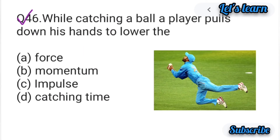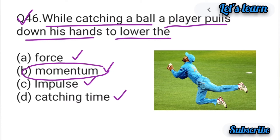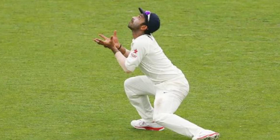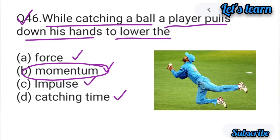Question number 46: While catching a ball, a cricket player pulls his hands down to lower the — जब कोई cricket player ball catch करता है तब हाथ को नीचे लाता है किसको lower करने के लिए? Options: force, momentum, impulse, या catching time को lower करने के लिए। Option B correct है — momentum को lower करने के लिए। हाथ नीचे लाने से catching time increase हो जाता है, जिससे rate of change of momentum decrease होती है, और momentum lower होता है।